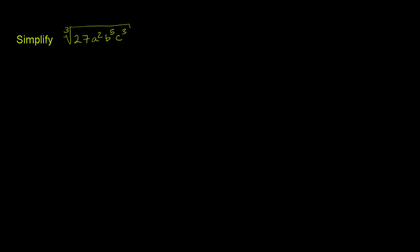So first of all, 27 — you may or may not already recognize this as a perfect cube. If you don't, you can do a prime factorization to see it is a perfect cube. 27 is 3 times 9, and 9 is 3 times 3. So 27's prime factorization is 3 times 3 times 3, which is the exact same thing as 3 to the third power. So let's rewrite this whole expression in terms of things that are perfect cubes and things that aren't. So 27 can be rewritten as 3 to the third power.